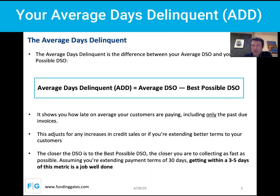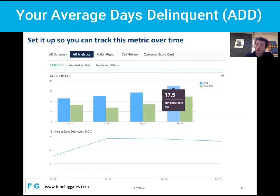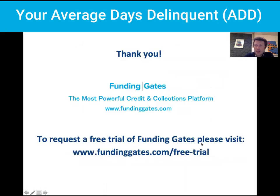The closer you are to your best DSO, the better. A deviation of around three to five days is actually pretty good. This is a really important metric that you should be tracking every week or every month, and you should set up dashboards to track it over time. Here you can see your standard average DSO over time and your best DSO next to it, and the difference between the two is your Average Days Delinquent. That's it for today — hope you enjoyed this, and stay tuned for more content.